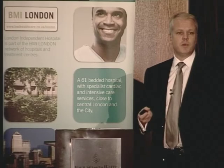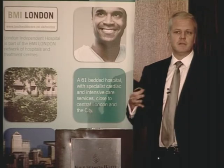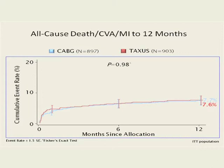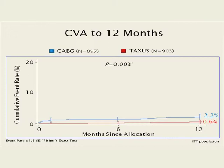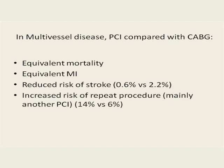The SYNTAX trial randomized 2,000 patients with complex multi-vessel disease to either bypass or PCI. The answer is the same: no difference in mortality between the two groups. There is a slight increase in stroke rate with bypass compared with PCI. In terms of repeat procedures, there is still a need for more with PCI than with bypass — 11% of the PCI group needed another PCI compared with only 5% of the bypass group. So in multi-vessel disease, both treatments allow equivalent mortality; reduced stroke risk with PCI comes at the cost of an increased risk of repeat procedure.